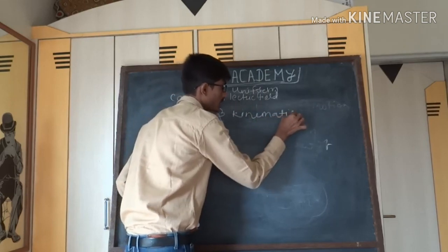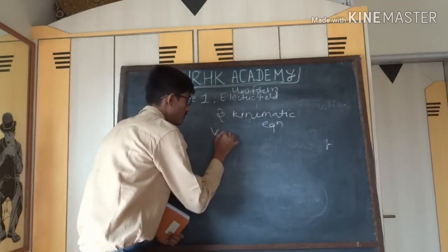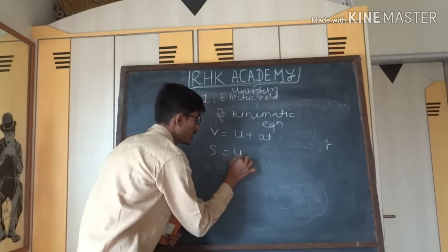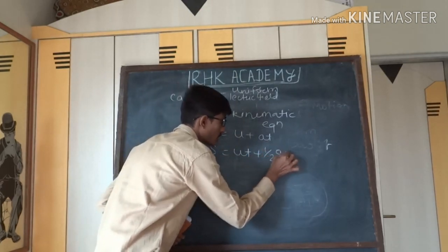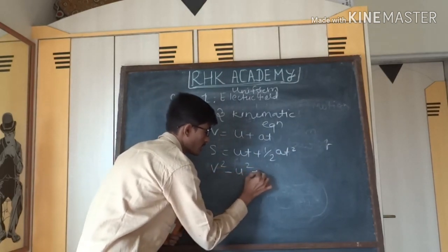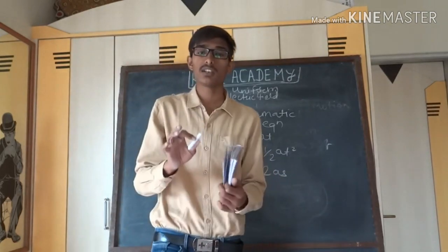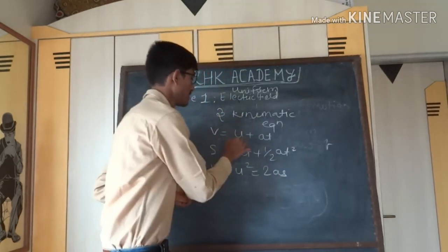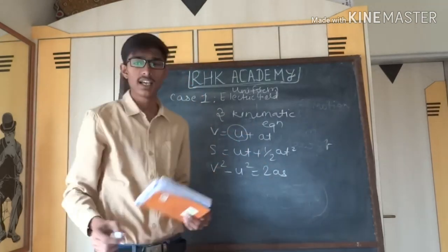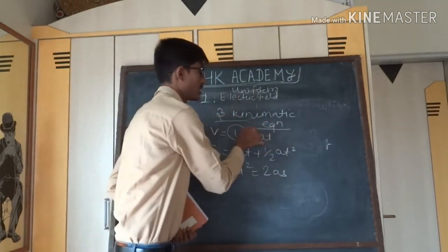The three kinematic equations are: v = u + at; s = ut + ½at²; and v² − u² = 2as. In this case, the electron is taken with initial velocity u = 0, so we will put u = 0 in all equations. Thus we can fully describe the motion of the electron using these three kinematic equations.